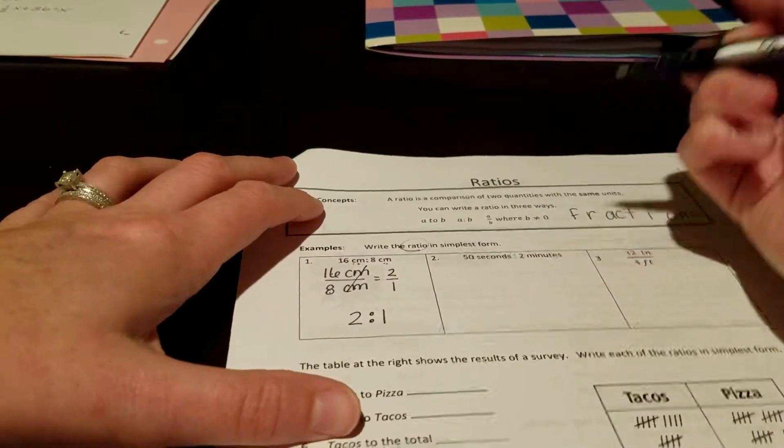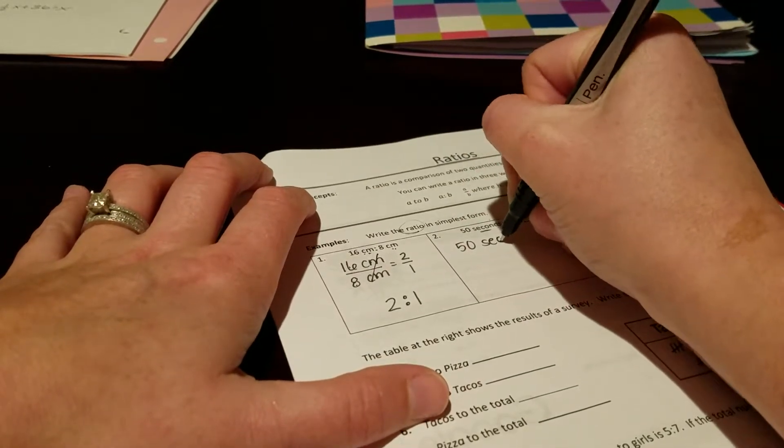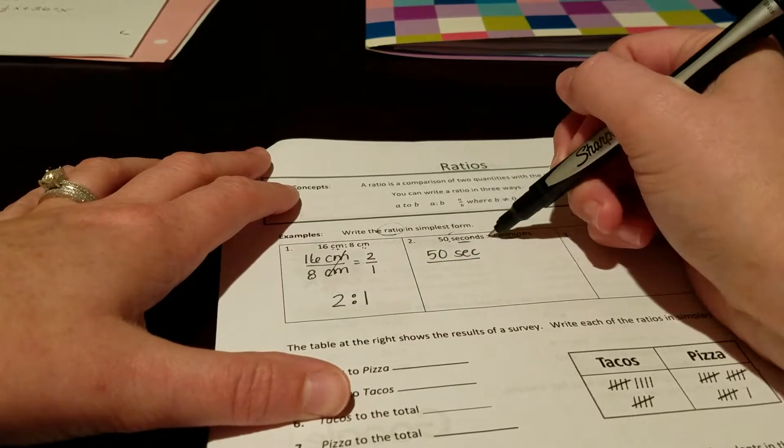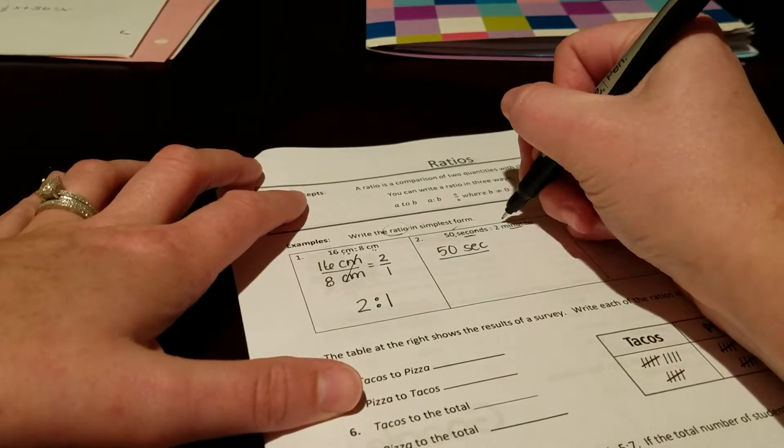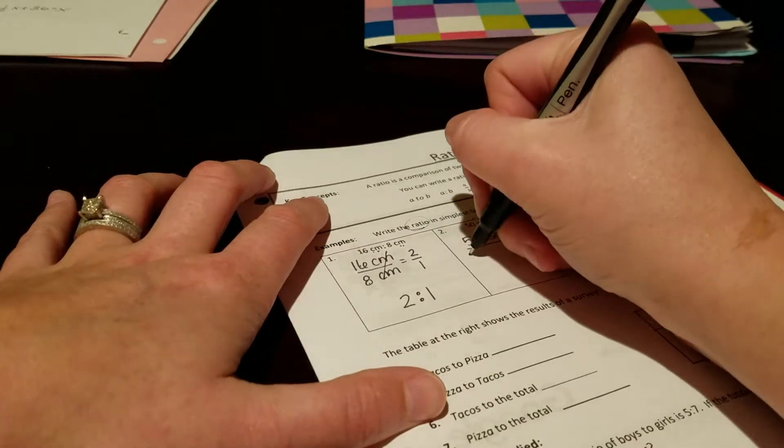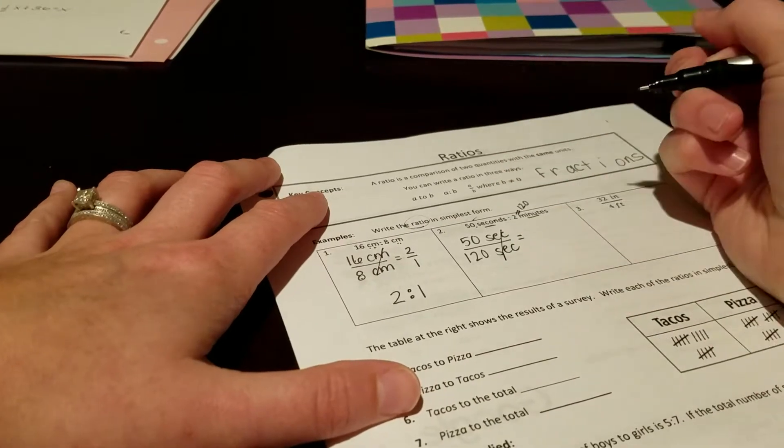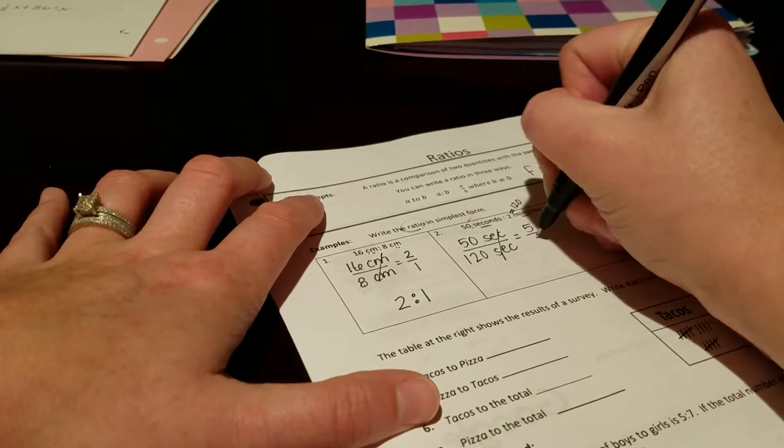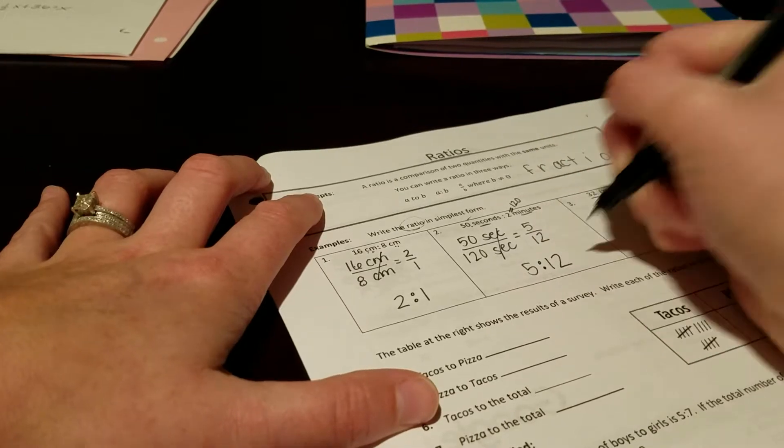In this one we have 50 seconds to 2 minutes. Seconds and minutes are different, so I have 50 seconds. I'm going to have to convert minutes into seconds. So in 1 minute there are 60 seconds, so in 2 minutes there are 120 seconds. Seconds over seconds cancel each other out. 50 over 120, which is going to be 5 over 12. Rewrite final answer with the colon.